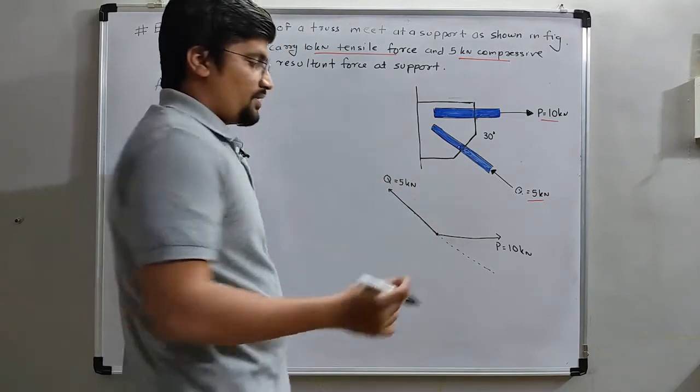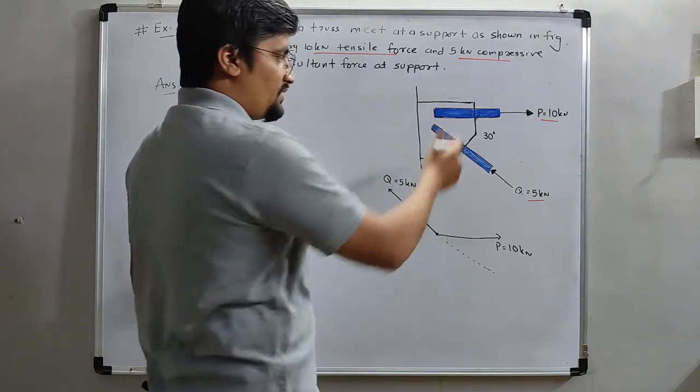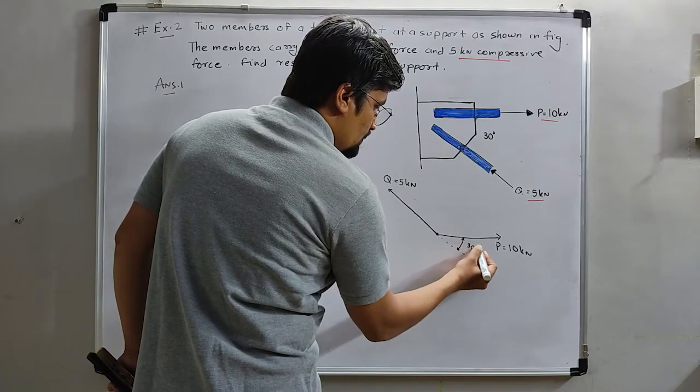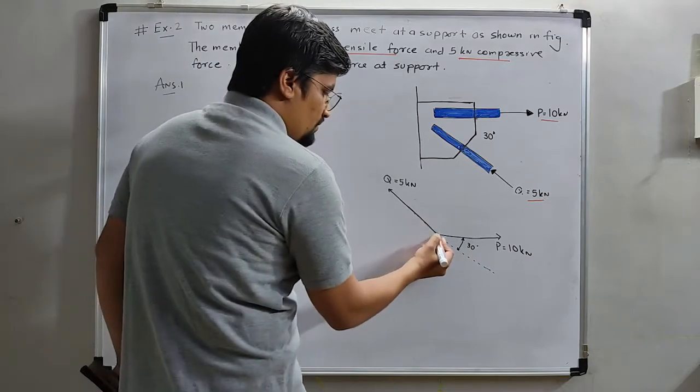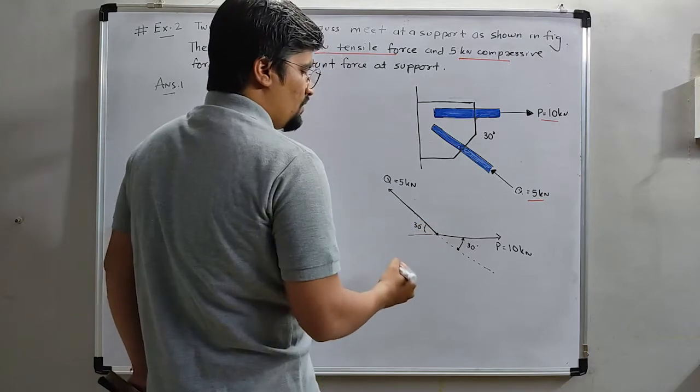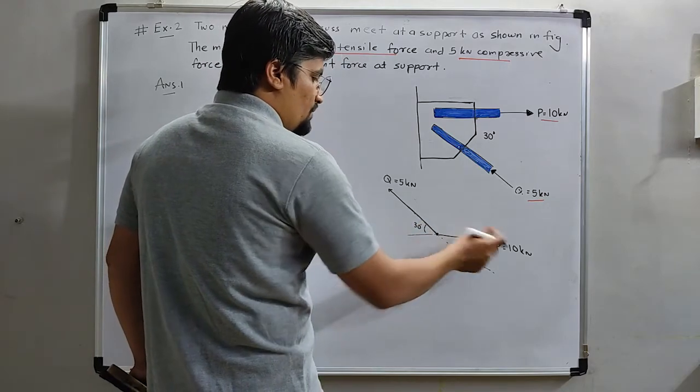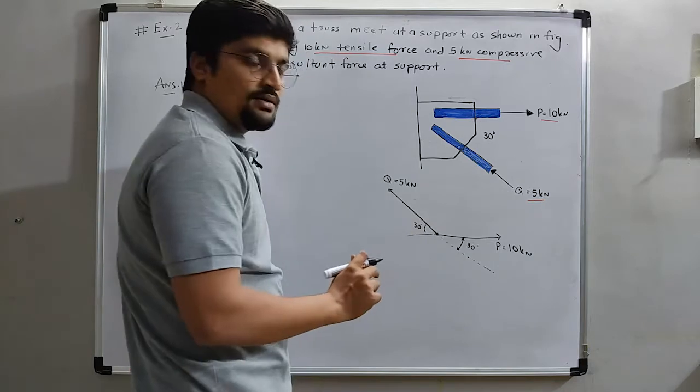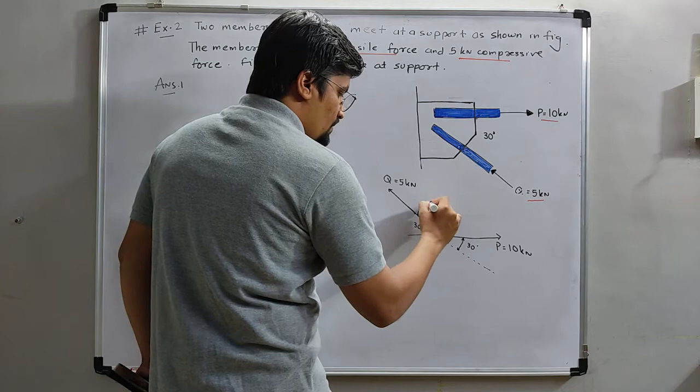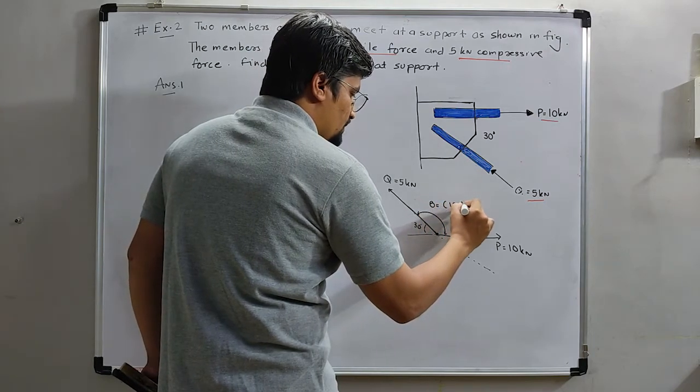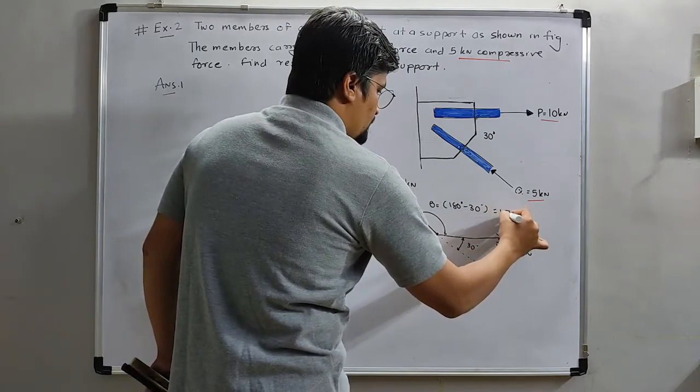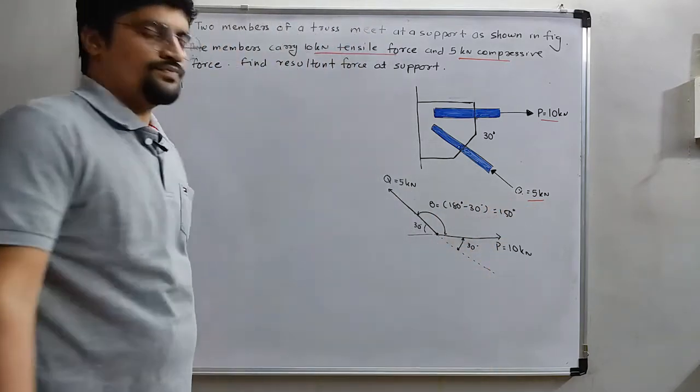Now we need to find the angle between P and Q. Here it is given 30 degree for this side. If this is 30 degree, then this will be also 30 degree. And we know that from here to here it is 180 degree. So this angle will be 180 degree minus 30 degree. So our theta will be 150 degree.